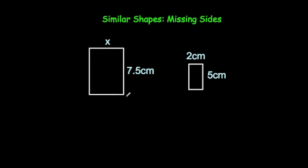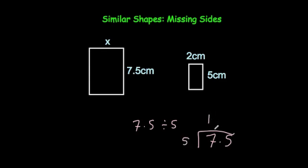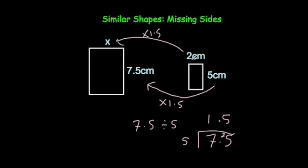Some people can see straight away the answer is 1.5, because 1.5 times 5 is 7.5. Another way is to use the bus shelter method: 7.5 divided by 5. 5 into 7 goes once remainder 2, and 5 goes into 25 five times, giving 1.5. So this shape is 1.5 times bigger than this shape — the scale factor is 1.5. To get X, we times 2 by 1.5, which equals 3 centimetres.